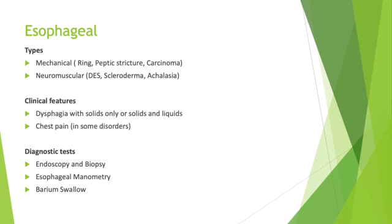In the esophageal category, we have two types. One is mechanical, which includes rings, webs, peptic stricture, and carcinomas. The neuromuscular type includes diffuse esophageal spasm, scleroderma, and achalasia. Clinical features depending on the type could be dysphagia only with solids or with solids and liquids both. Chest pain can also be present, and symptoms could be intermittent or progressive. Diagnostic tests could be endoscopy and biopsy for carcinoma or peptic stricture, and barium swallow as a second step. For neuromuscular causes, esophageal manometry is the gold standard, followed by barium swallow.